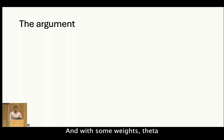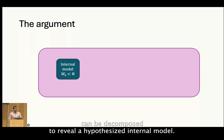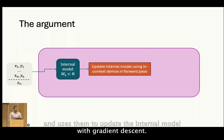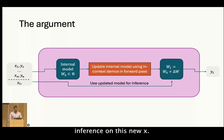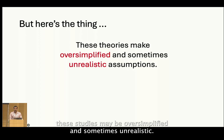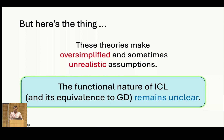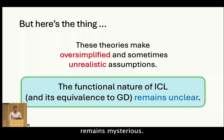The argument is the following: an LLM with some weights theta can be decomposed to reveal a hypothesized internal model. When some X-Y pairs are shown in context, the LLM learns to extract the training pairs and uses them to update the internal model with gradient descent in the forward pass, then uses the updated model to perform inference on the new X. But the assumptions made in these studies may be oversimplified and sometimes unrealistic. Our position is that the true functional nature of ICL and its equivalence to traditional learning methods like GD remains mysterious.